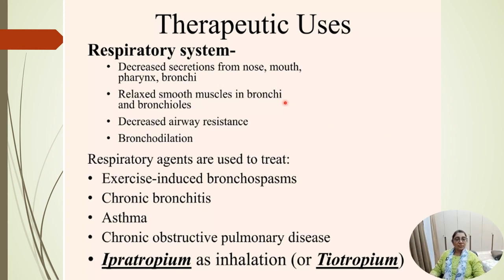For the respiratory system, anticholinergic drugs decrease secretion from the nose, mouth, pharynx, and bronchi; they relax smooth muscle of the bronchioles and bronchi, decrease airway resistance, and cause bronchodilation. They are used in exercise-induced bronchospasm, chronic bronchitis, asthma, and chronic COPD. Ipratropium bromide and tiotropium bromide are administered via inhaler route.